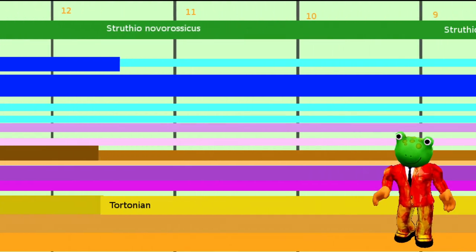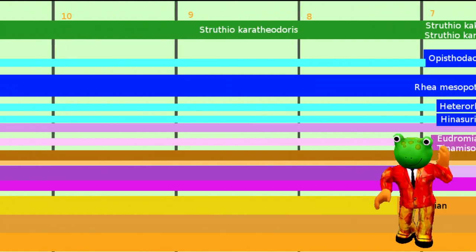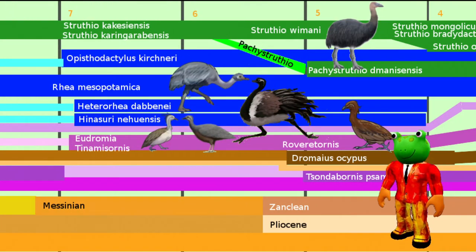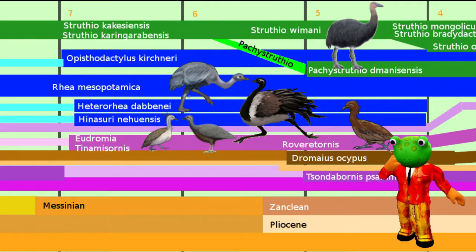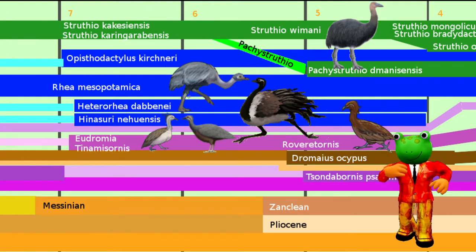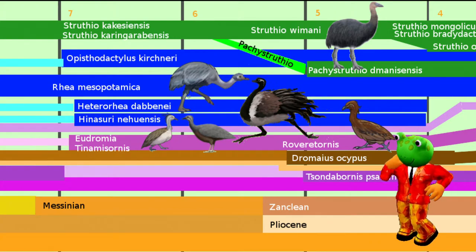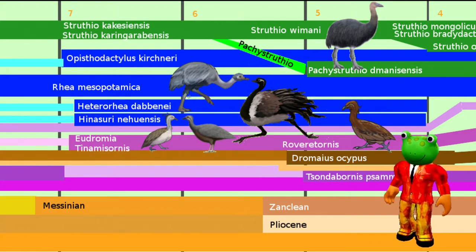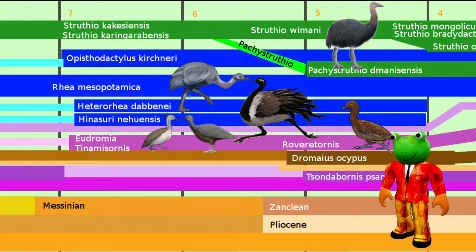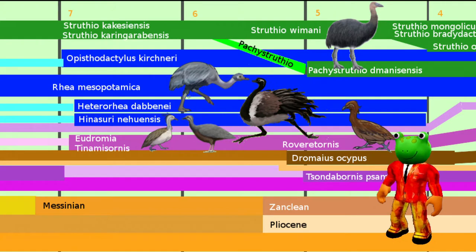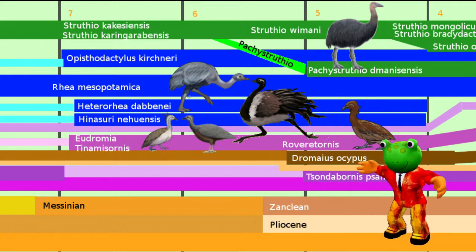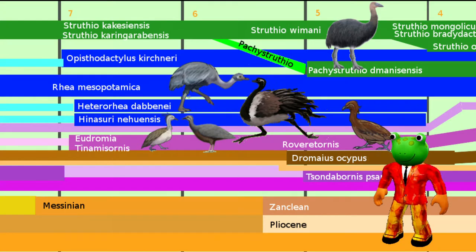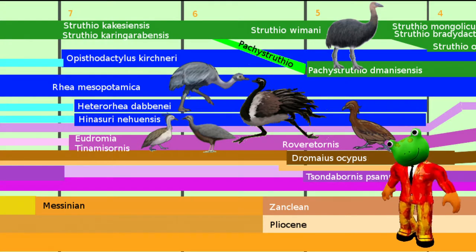About 7 million years ago, a number of fossil species existed in South America. Four species of the Rhea group shared their habitat in Argentina: Rhea, Hinasuri, Heterorhea, and Opisthodactylus. Alongside them lived several Tinamu species, two of which were found as fossils in this period. In Eurasia and Africa lived a couple of ostrich species.